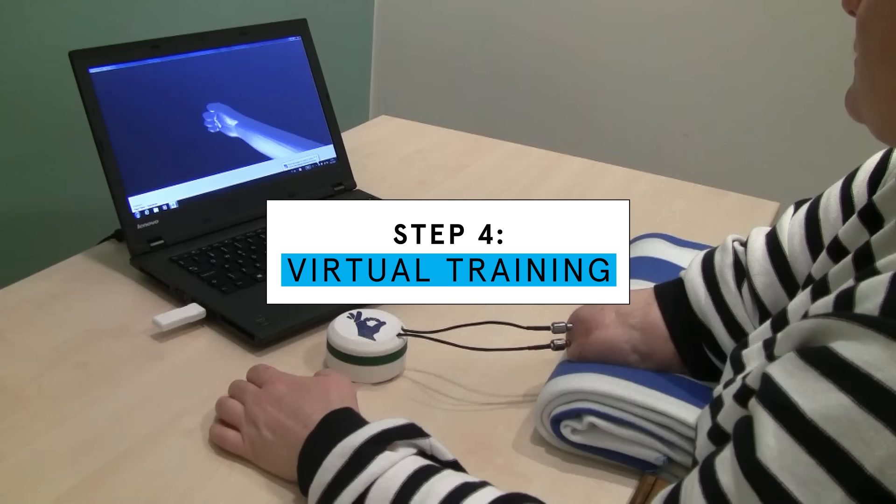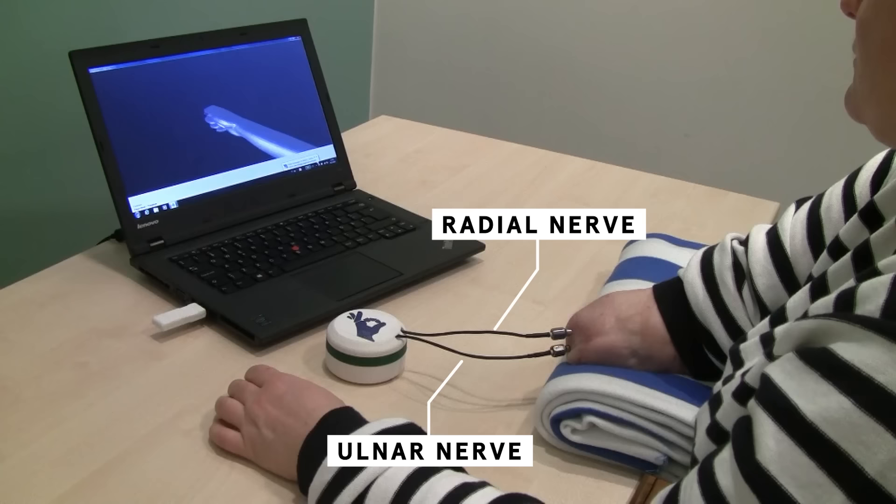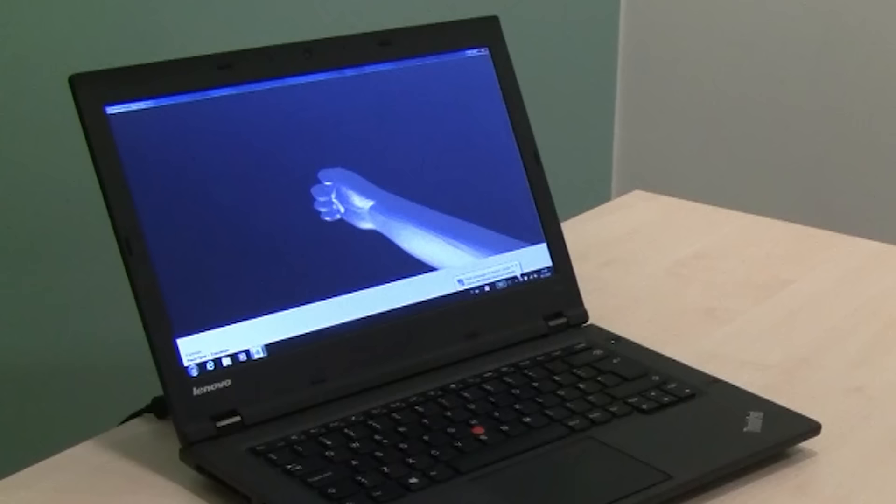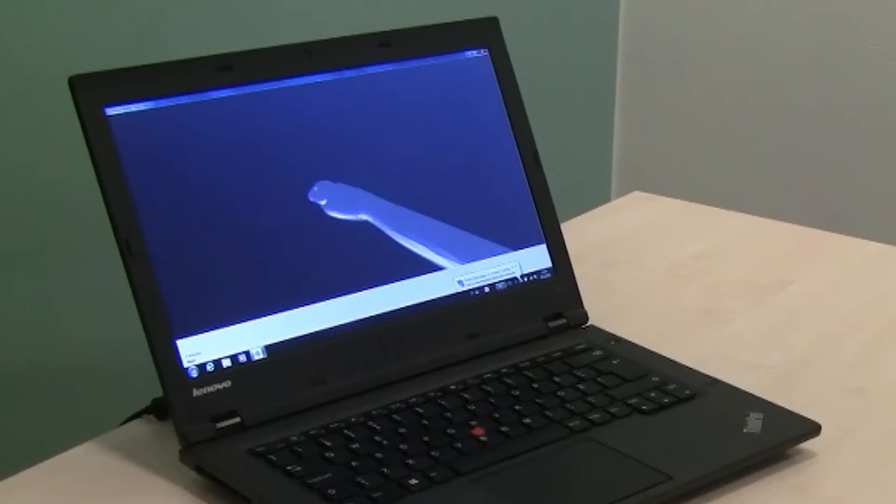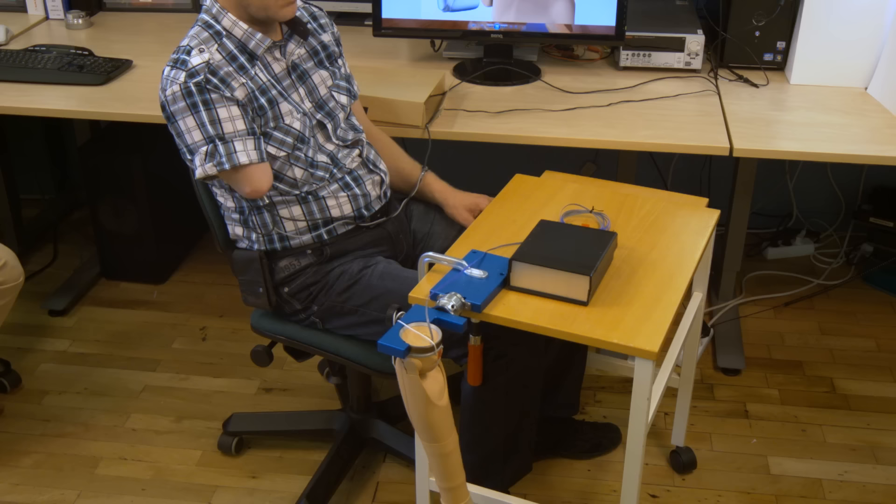The next step involves training the patient using software. This was actually the first time we saw the patient after the surgery. We connected it to a virtual reality system. Those two cables coming out of the implants are sending signals wirelessly to the computer, where they are interpreted and used to control a virtual limb. This trains the muscles and makes the signals more distinct and reliable, in preparation for when the patient gets their bionic limb.